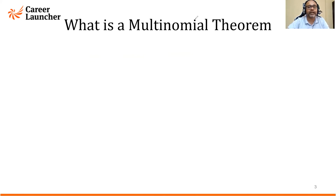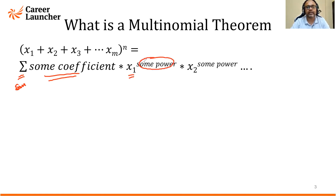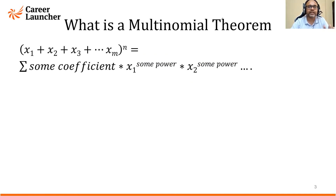If you expand a multinomial with m variables raised to the power of n, the expansion looks like this: it is a sigma (sum) of some coefficient multiplied by the first variable raised to some power, the second variable raised to some other power, and so on — all variables raised to some power. This is how every term will look, just as we saw in binomial theorem.